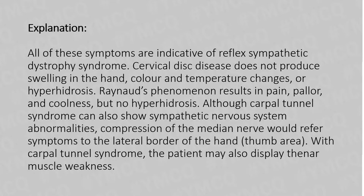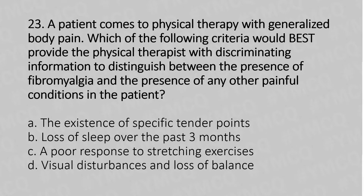Now let's move to our 23rd question. A patient comes to physical therapy with generalized body pain. Which of the following criteria would best provide a physical therapist with discriminating information to distinguish between the presence of fibromyalgia and the presence of other painful conditions? Option A: The existence of specific tender points. Option B: Loss of sleep over the past three months. Option C: A poor response to stretching exercises. Option D: Visual disturbance and loss of balance.